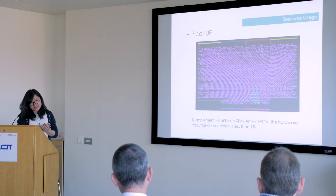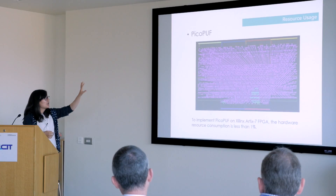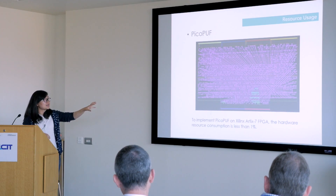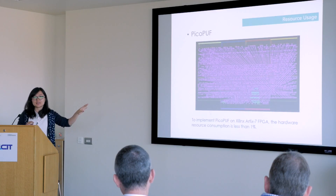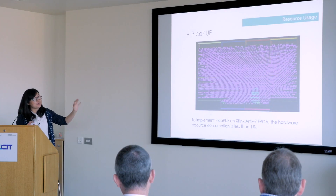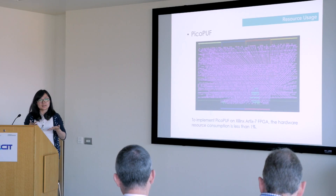Another result I want to show here is the floor plan of the PUF implementation on the FPGA. The blue color on this diagram shows the hardware resource usage for the PUF implementation. We can see it is very, very small — from the experiment, it is only less than 1%. This also proves that PUF is very suitable for low-cost device applications.